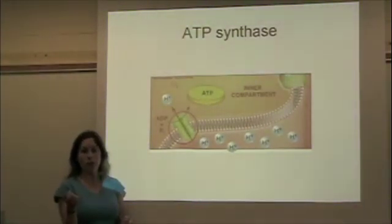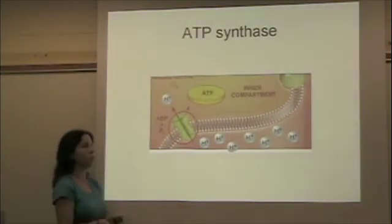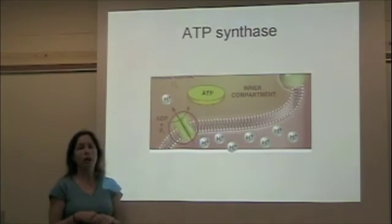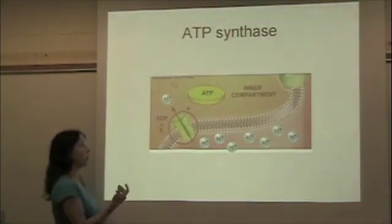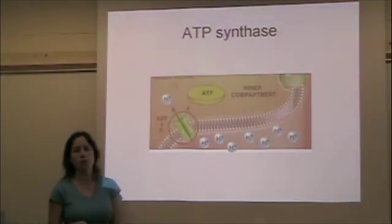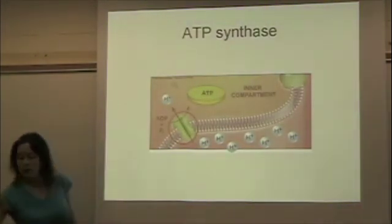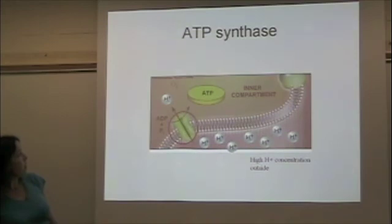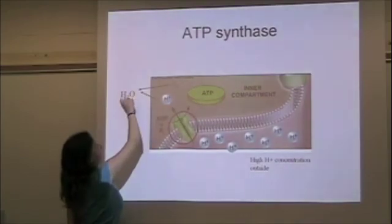From the electron transport chain, we also have those electrons. We need to get rid of those too; otherwise, the electron transport chain will get backed up and we'll no longer create the hydrogen ion gradient. Oxygen is a small molecule that diffuses in—we breathe it in through respiration.